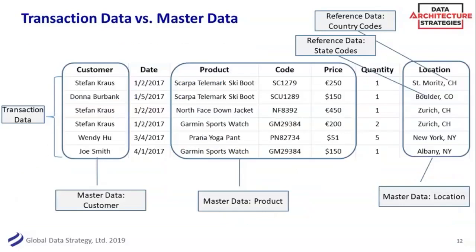That's the difference between transaction and master data. Your master data is going to be your core things like customers — Stefan bought three products, but there's still only one Stefan. Trying to get that right, or figuring out whether there's an S. Krauth, or that Donna Burbank is another customer. The other master data would be your product: similar product codes, price codes, and so on.